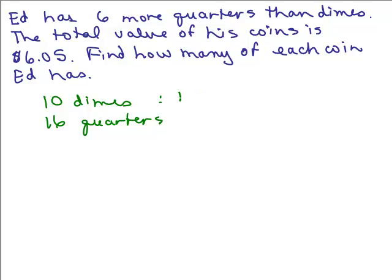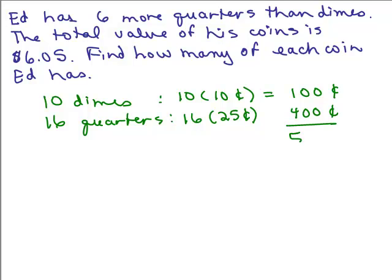Well, if you had 10 dimes, then each dime is worth 10 cents, right? So you'd have to multiply each one by 10 cents, and I'm going to put this in cents, that would be 100 cents. And if you had 16 quarters, 16, and each one is worth 25 cents, and that ends up being 400 cents, and adding together, that would mean you've got 500 cents, or $5, but the total value of his coins is $6.05. So for instance, this is not the correct answer.